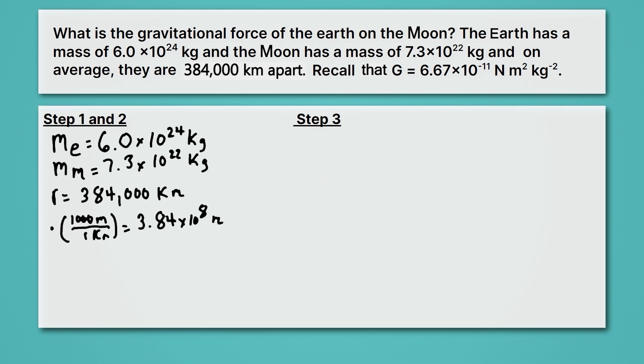And we'll go ahead and put that in scientific notation as well, so it can join all its friends. It's 3.84 times 10 to the 8th meters. And if you just go on your calculator and you type in 384,000 times 1,000, and it's in scientific notation mode, it'll go ahead and spit out 3.84 times 10 to the 8th meters.